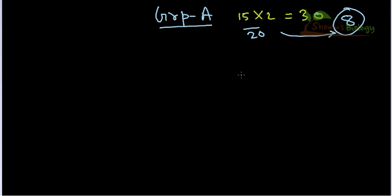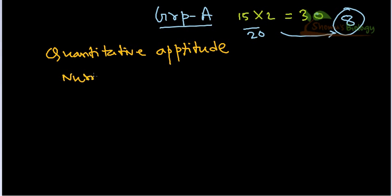They will ask you some numerical problems to check your quantitative aptitude, which is also called general aptitude. They will also check numerical reasoning. These are the things they check for in Group A. They're going to ask many questions regarding geometry.